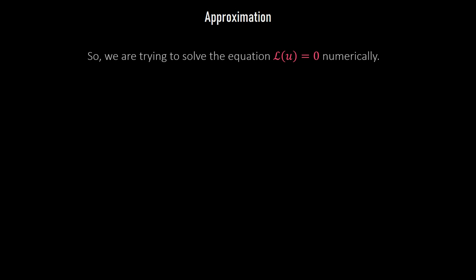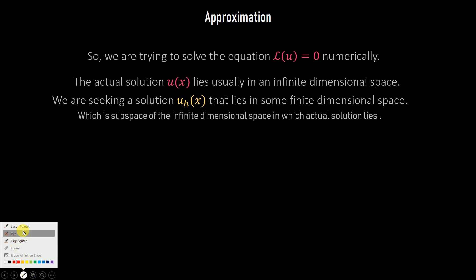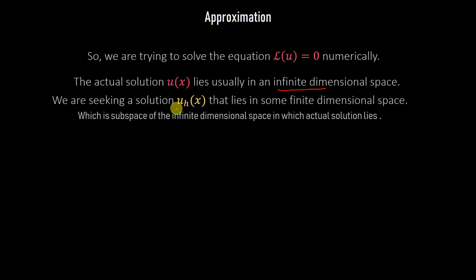In the numerical solution to these PDEs, the solution we are trying to get is an approximate solution. u(x) is the actual solution and u_h(x) is the approximate solution we want to find. u(x) lies in some infinite-dimensional space, while u_h(x) lies in some finite-dimensional space. This finite-dimensional space is a subspace of the infinite-dimensional space in which the actual solution lies — we'll get an intuitive picture of this at the end of the video.